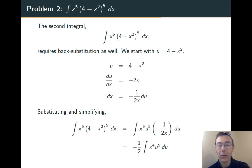Negative 1 half, integral, x to the 4th, u to the 5th, du. Great. We need to get that x squared out.